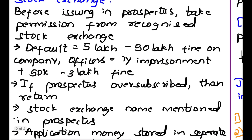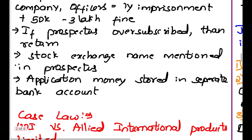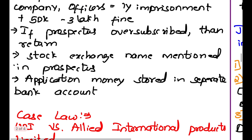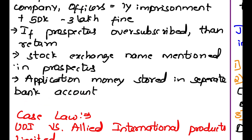If the prospectus is oversubscribed, then the oversubscription payment will be returned. The stock exchange name should be mentioned in the prospectus. Application money is stored in a separate bank account, and whoever buys a share — that money will be utilized only for the company's purpose.